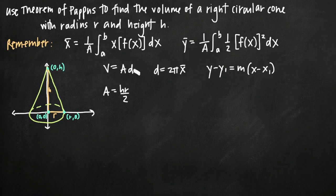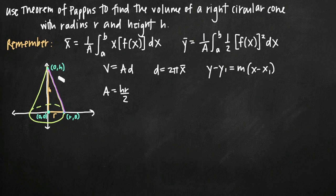We can't find distance yet because we first need the x-coordinate of the centroid of our plane region. Going back to the formula for the x-coordinate, we already have a value for area, and we know the limits of integration are 0 to r. But we still need f(x) — we need to find the equation of this line, which encloses the area of the triangle between the line and the x-axis.